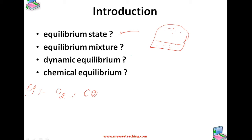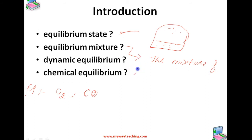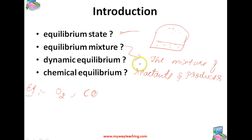We say that the system has reached the equilibrium state at this stage. The mixture of reactants and products in the equilibrium state is called an equilibrium mixture.